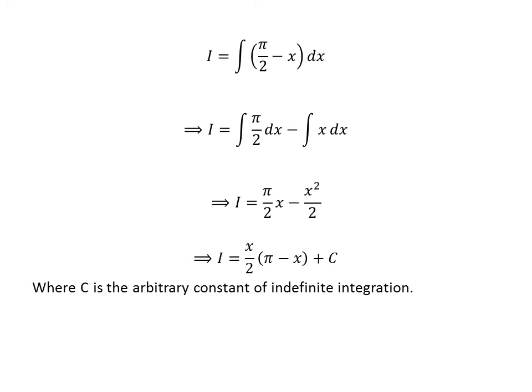Taking the common factor half of x out, we get I is equal to half of x times pi minus x, and then added capital C which is the arbitrary constant of indefinite integral. Do not forget to add this constant in the end of any indefinite integration.